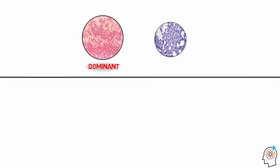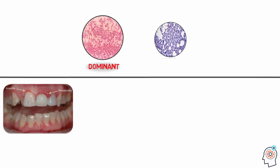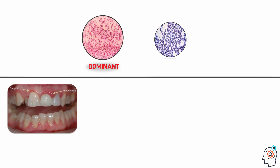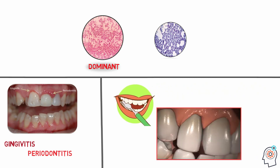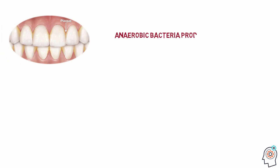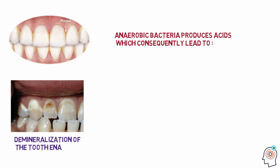The overgrowth of gram-negative anaerobic bacteria is considered one of the main causative factors of gingivitis and periodontitis. This highlights the importance of regular dental plaque removal through tooth brushing before gram-negative anaerobic bacteria have the time to grow and put your oral health at risk. As dental plaque matures when not cleaned properly, anaerobic respiration produces acids which lead to demineralization of the tooth enamel, resulting in tooth decay and dental cavities.